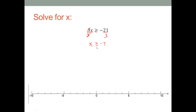Since we have the 'or equal to' bar, we will use a bracket on negative seven. We want to display all the numbers that are greater than or equal to negative seven. So I go to negative seven on the number line, place a bracket facing the right, and shade to the right because all of those numbers satisfy this inequality.